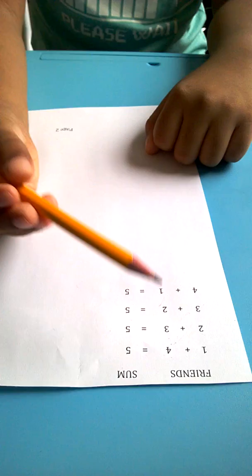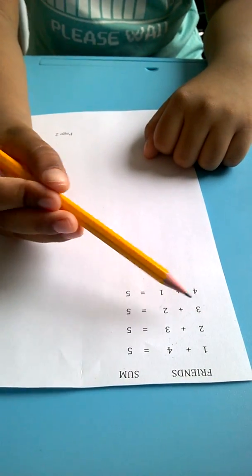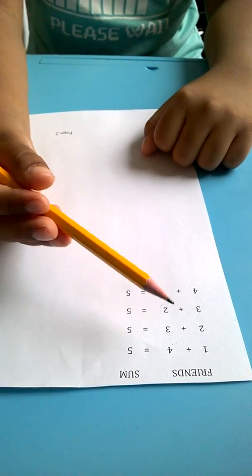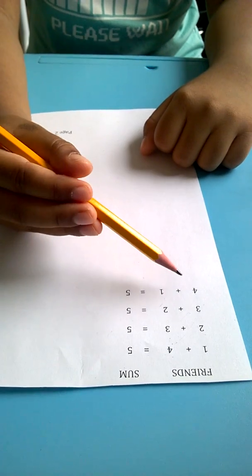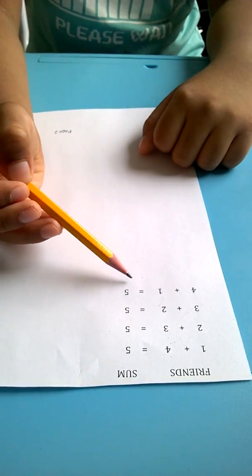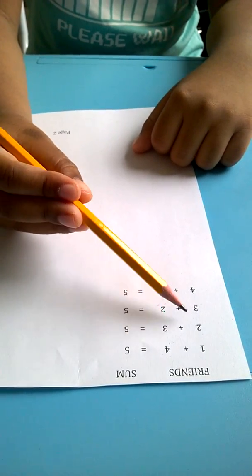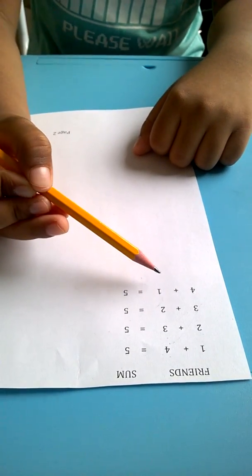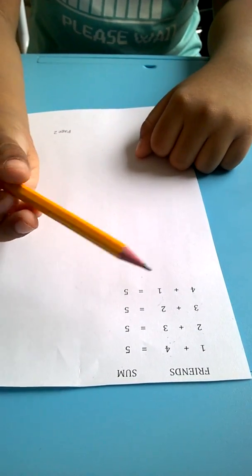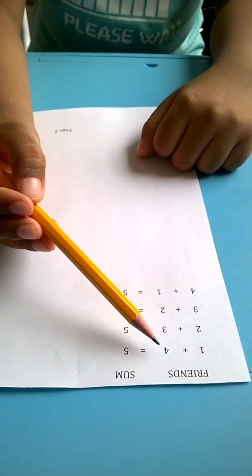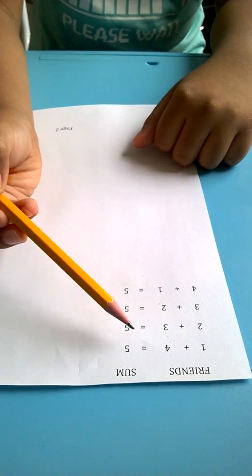For example, 1 plus 4 is 5, 2 plus 3 is 5, 3 plus 2 is 5, and 4 plus 1 is 5. These numbers, 1 plus 4, 2 plus 3, 3 plus 2, and 4 plus 1 are called friends. 1 is a friend of 4, and when they add, the result is 5.